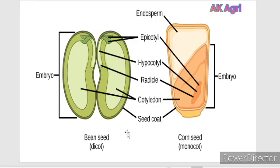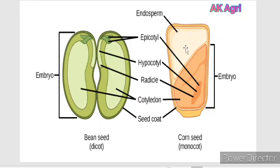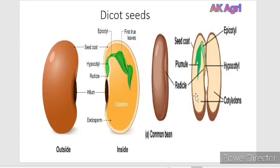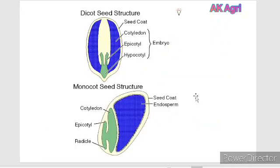This is the structure of seed. You can see here the dicot seed and the monocot seed. The seed consists mainly of three parts: the outermost seed coat, two cotyledons in the case of dicot, and the embryo. The embryo consists of epicotyl, hypocotyl, and radicle. In the case of monocot, it consists of a shield-shaped single cotyledon along with the embryo. The reserved food material, that is the endosperm, nourishes the growing embryo when it is dispersed. You can refer here the structure of dicot seed and the monocot seed.